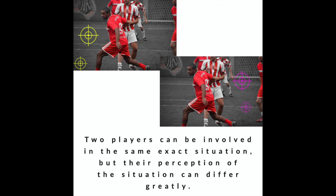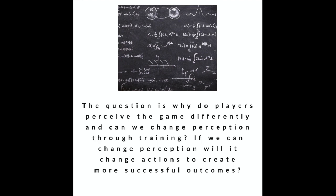If you see the two photos here, maybe one player's focus is on the yellow targets, maybe another player's focus is on the pink targets, and maybe another player can see both. So the question is: why do players perceive the game differently? And if they do, can we change the lower-level player's perception through training?